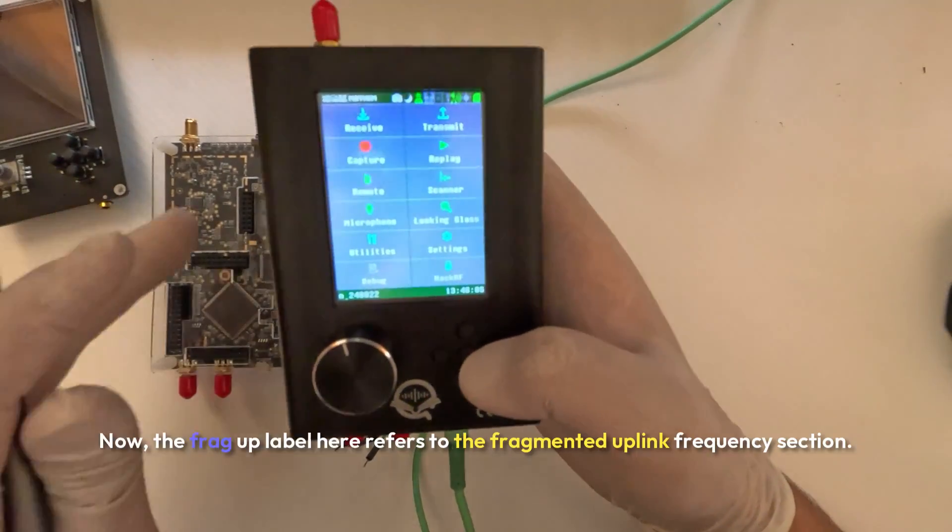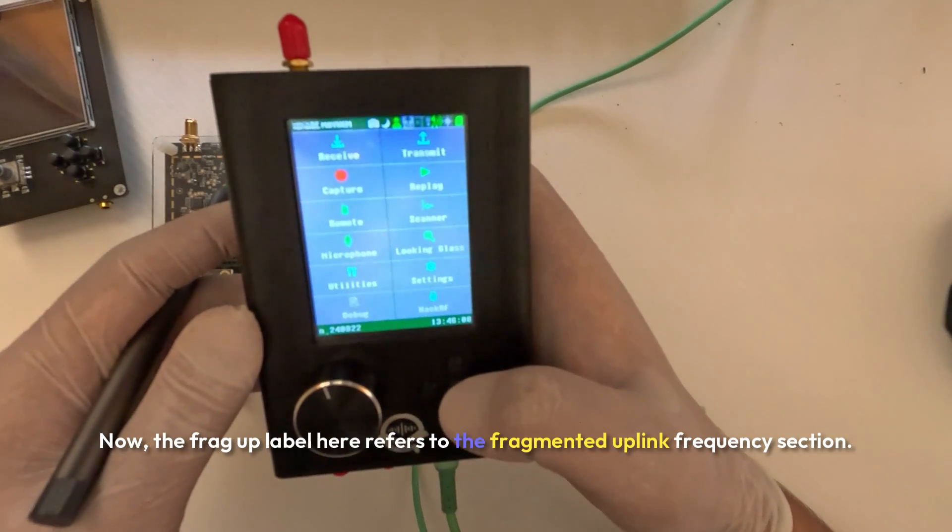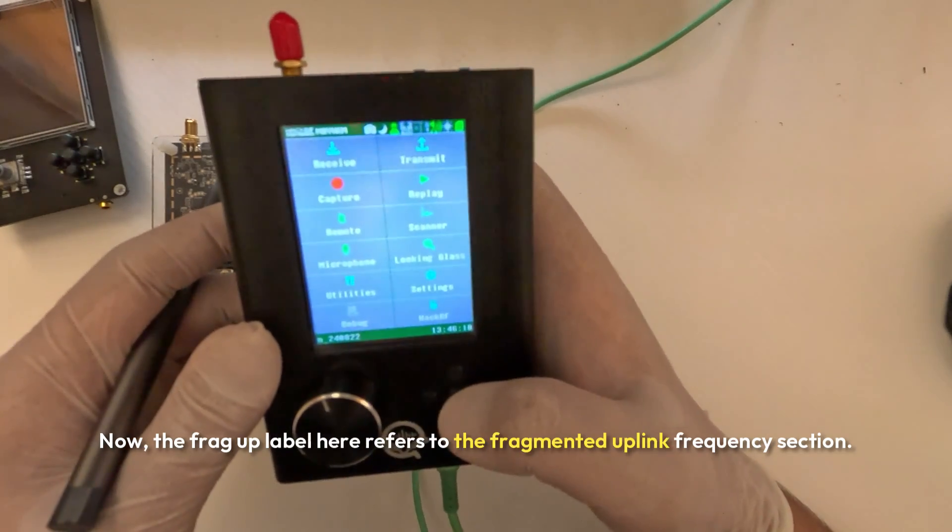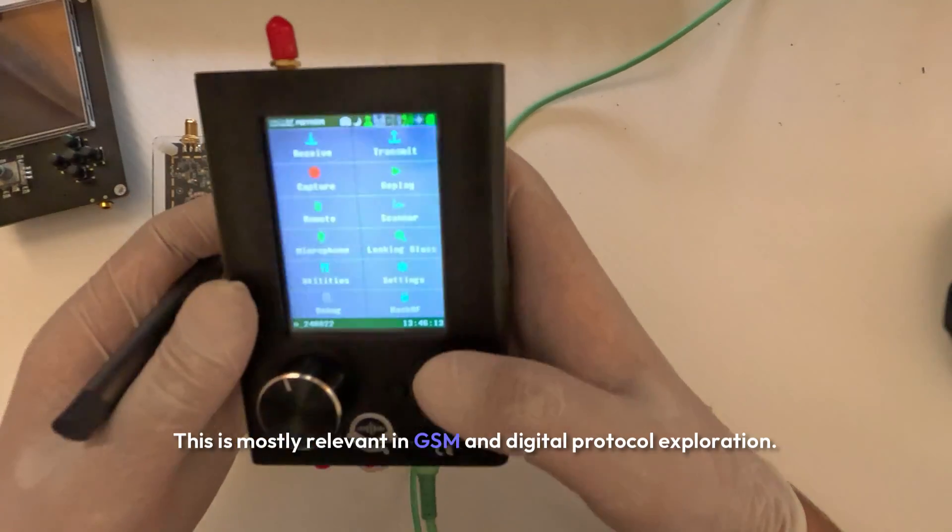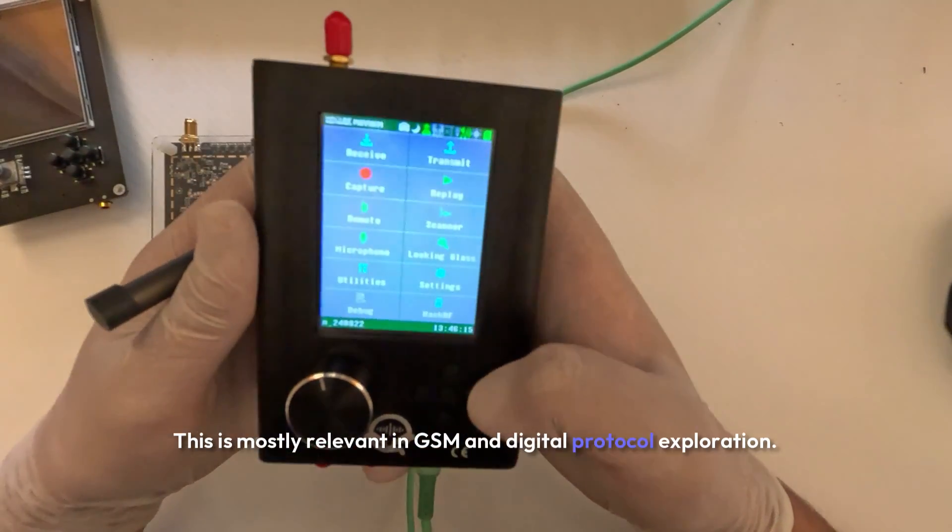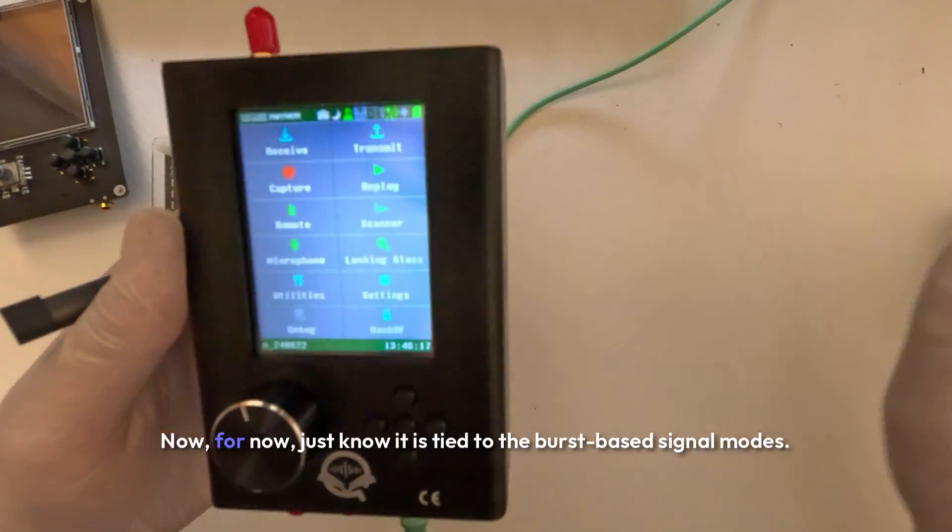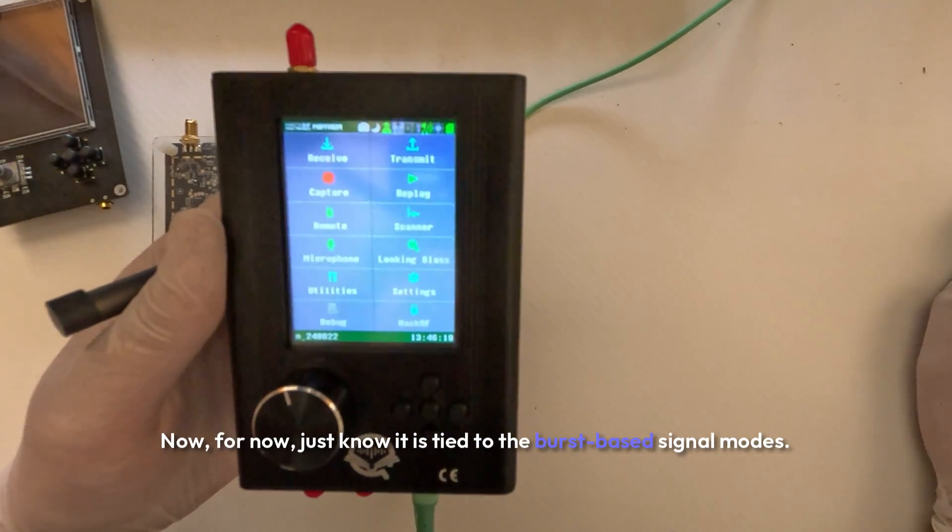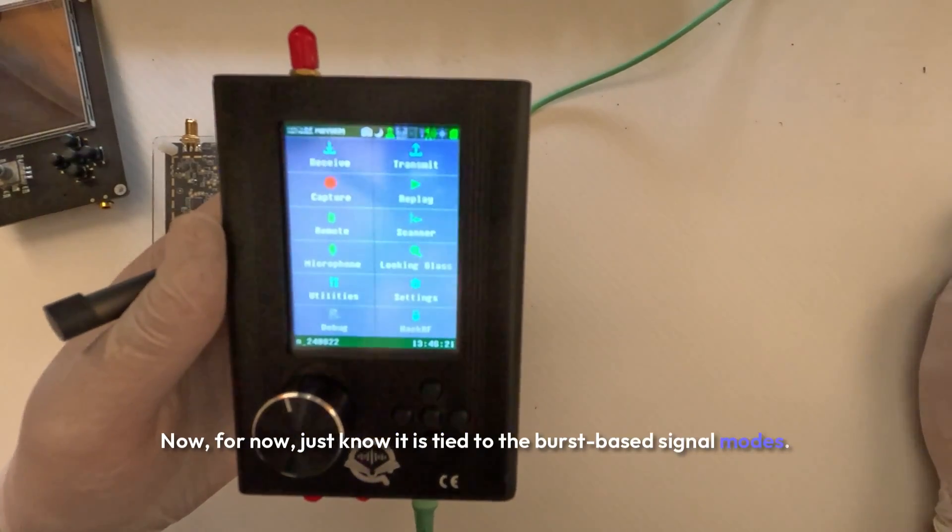The frag up label here refers to the fragmented uplink frequency section. This is mostly relevant in GSM and digital protocol exploration. For now just know it is tied to the burst based signal modes.